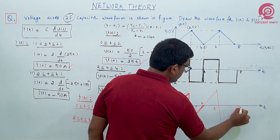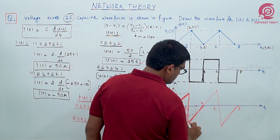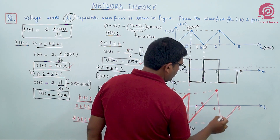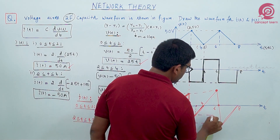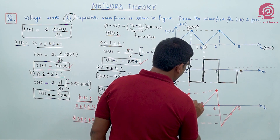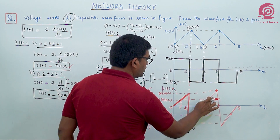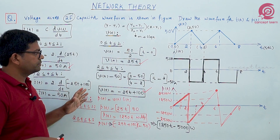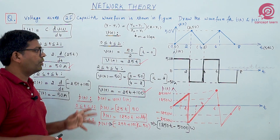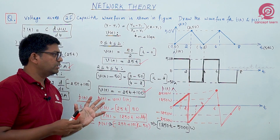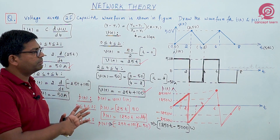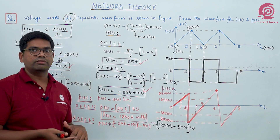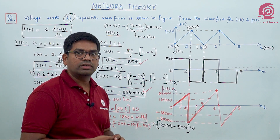This gives a sawtooth-like waveform for power, which continues similarly from 4 to 6, 6 to 8, and so on. In this way we can easily draw the waveform from the expression, or write the expression from the waveform. This is the complete model for analyzing voltage, current, and power waveforms for a capacitor.